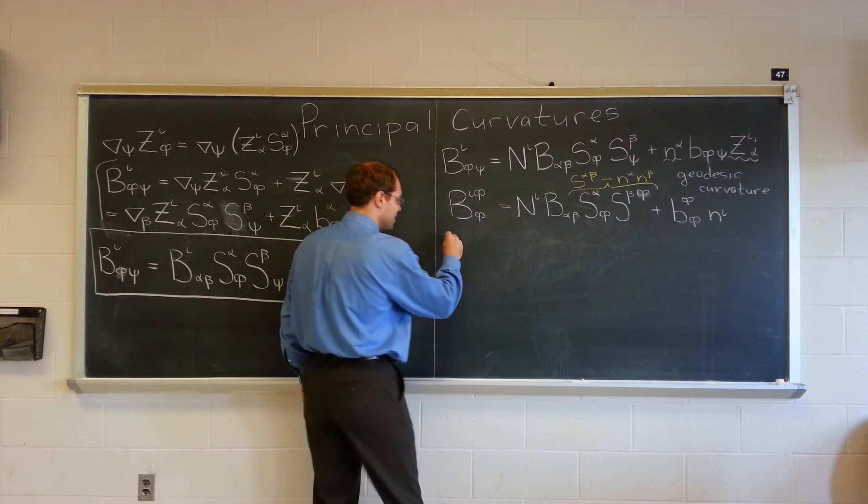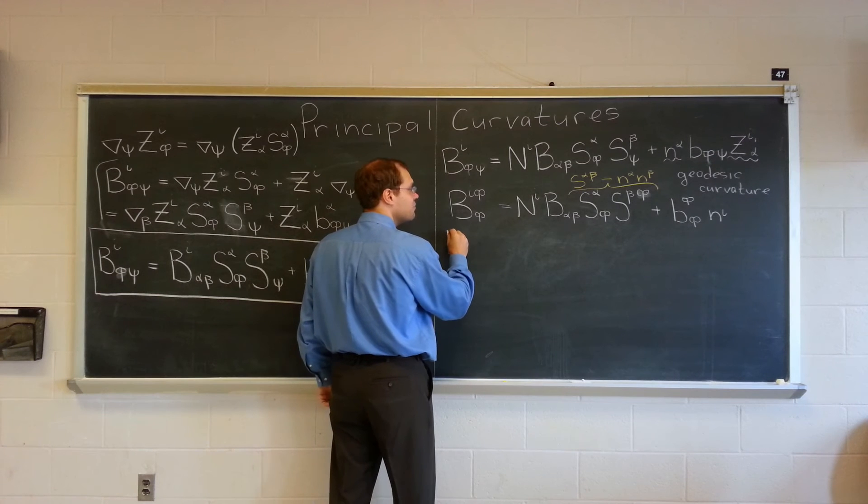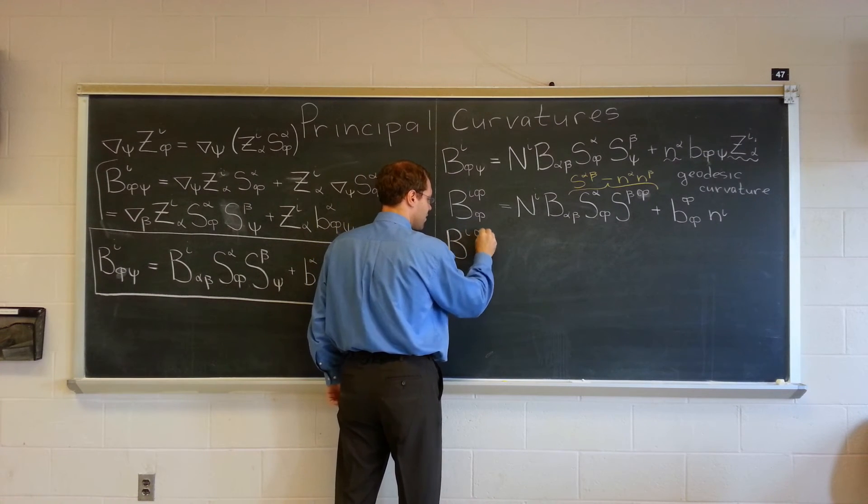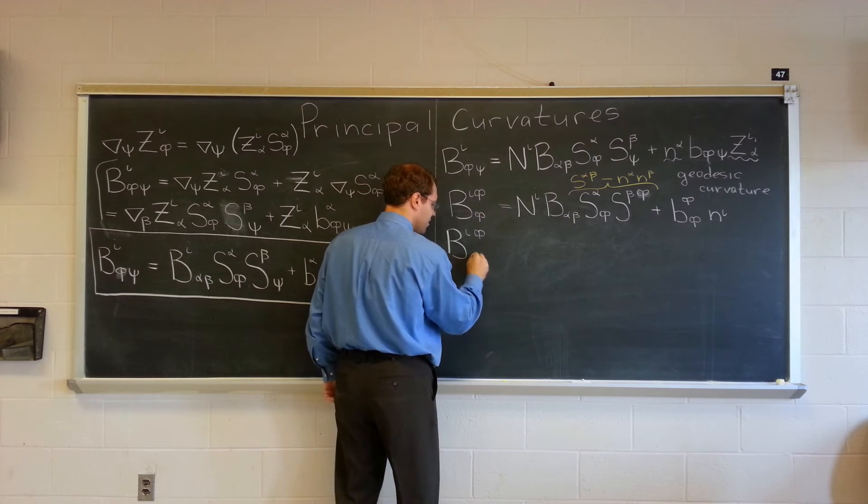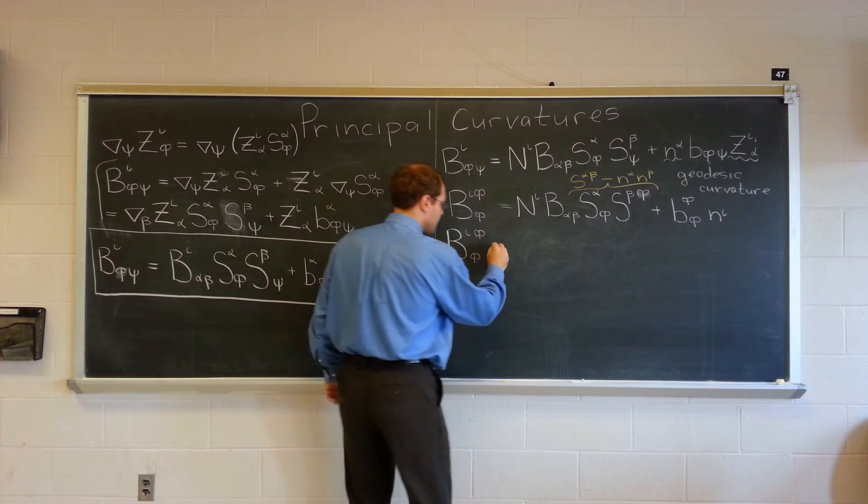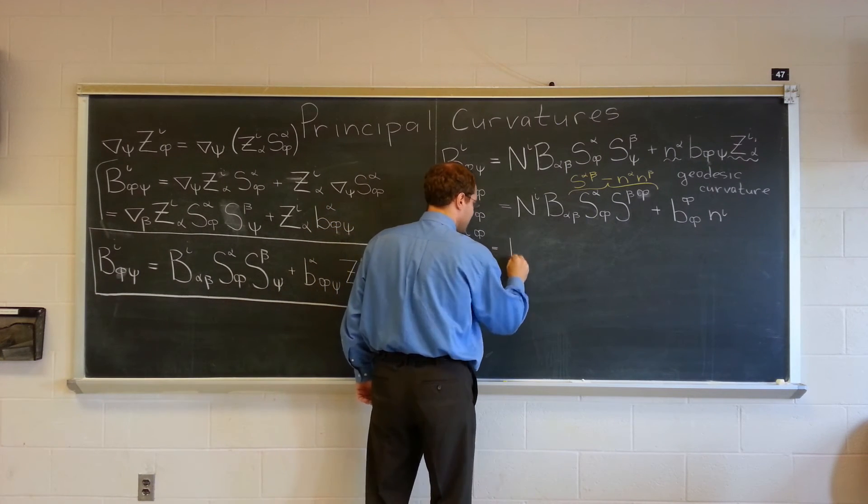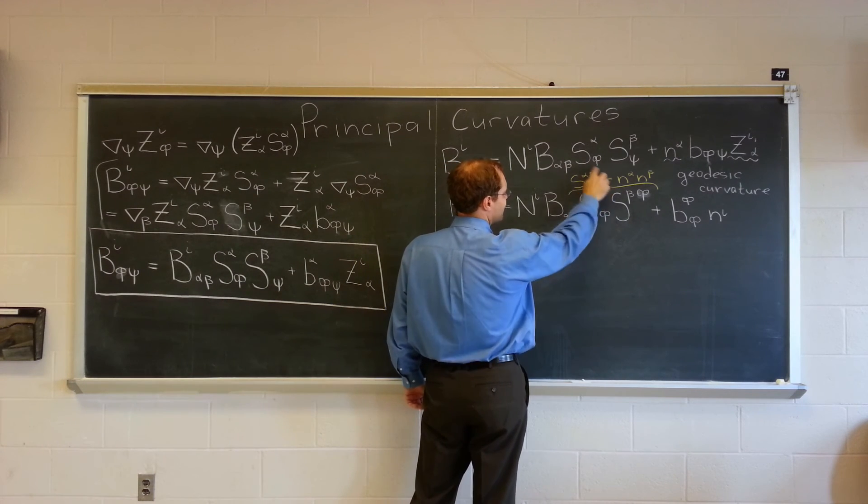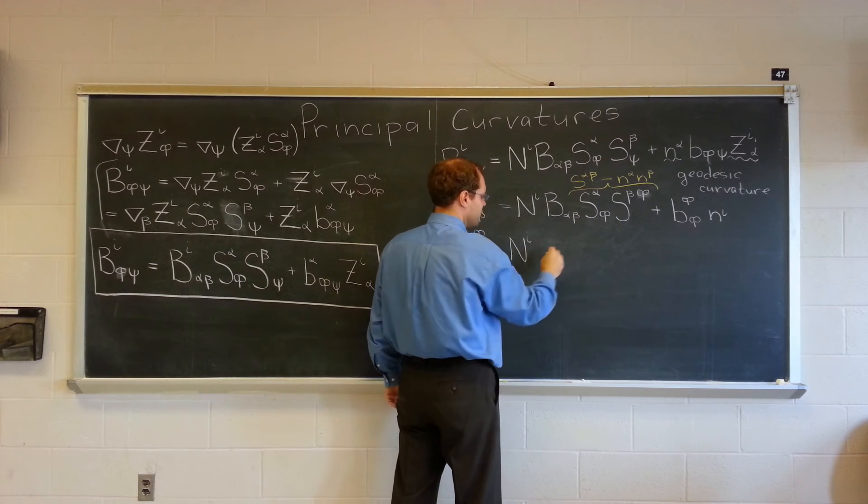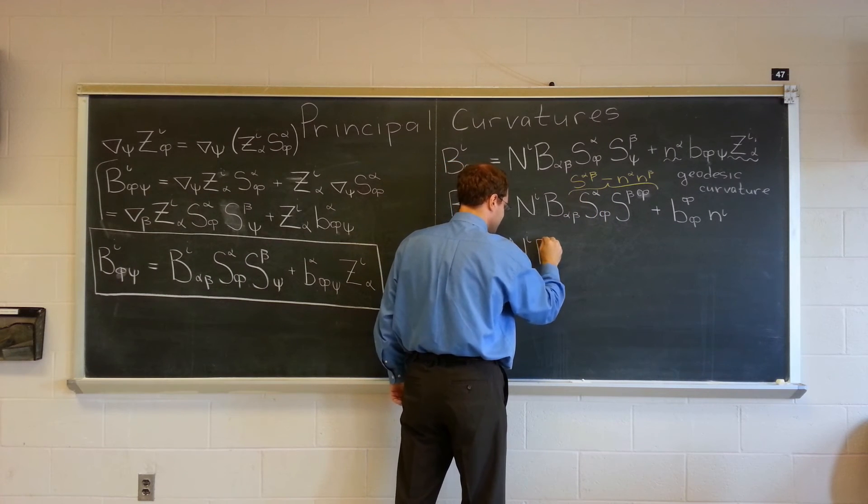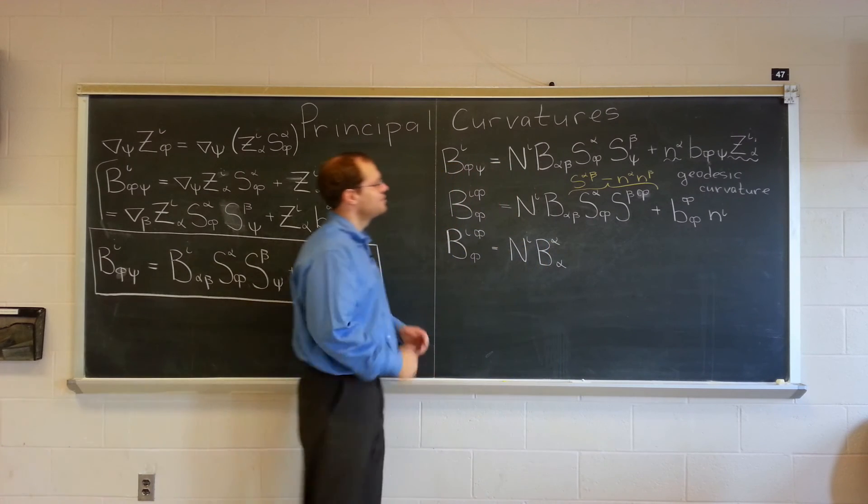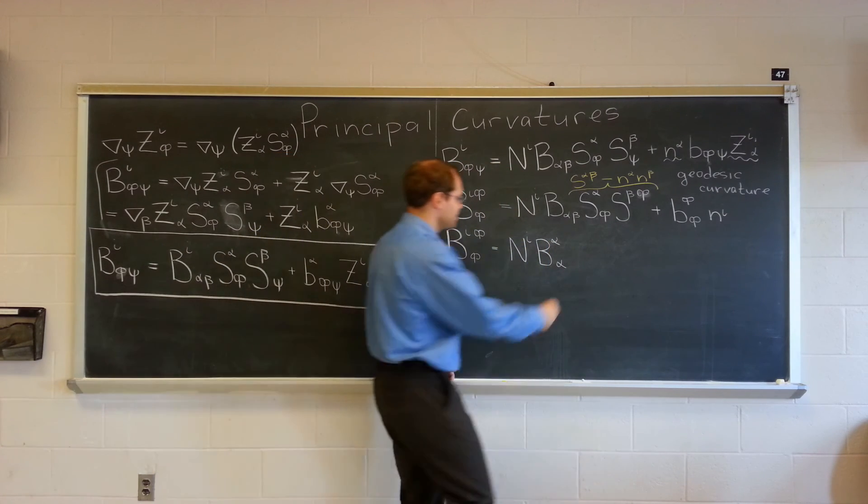So, let's see what we now have. We now have B I phi phi equals N I. It's just will be this term will be the first term. So, that's just alpha alpha. My favorite object. Always nice when it shows up. Minus.